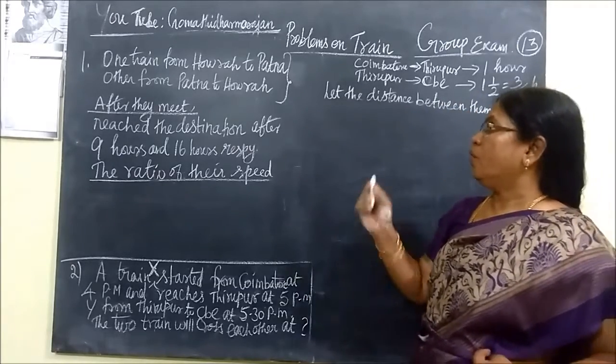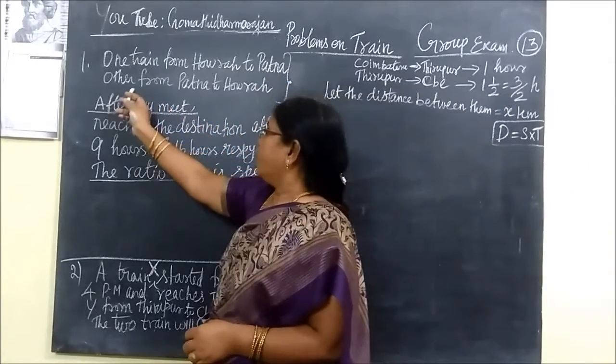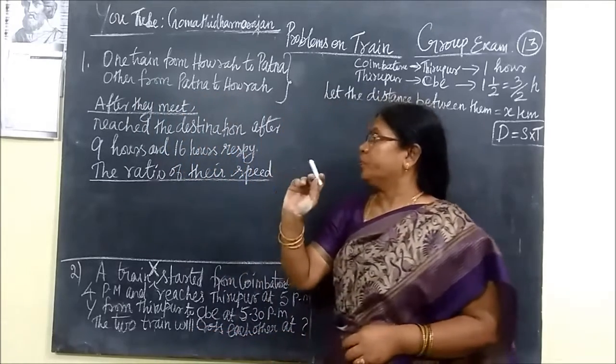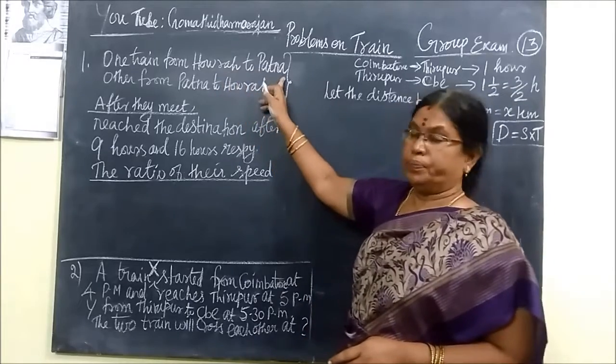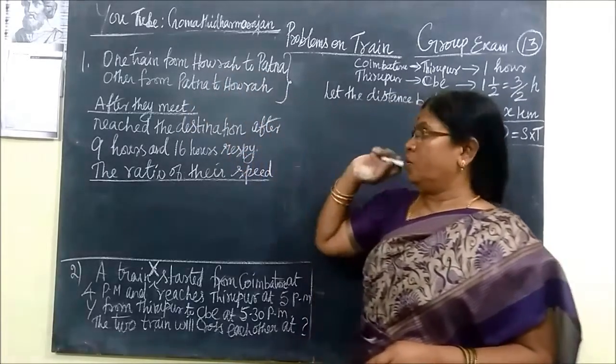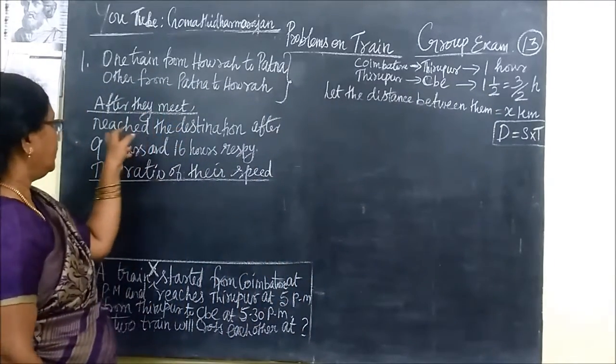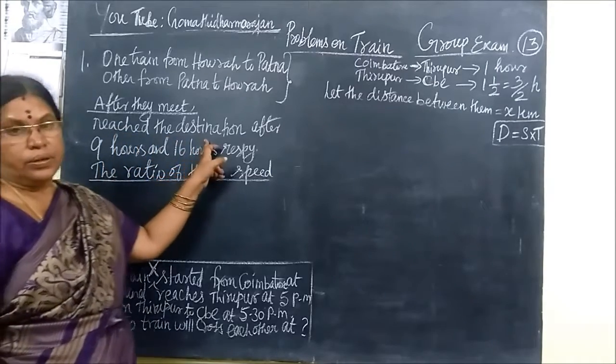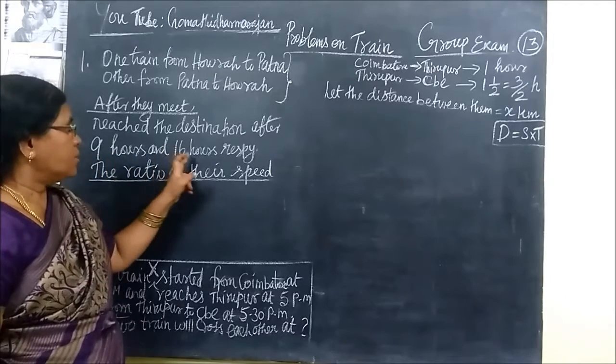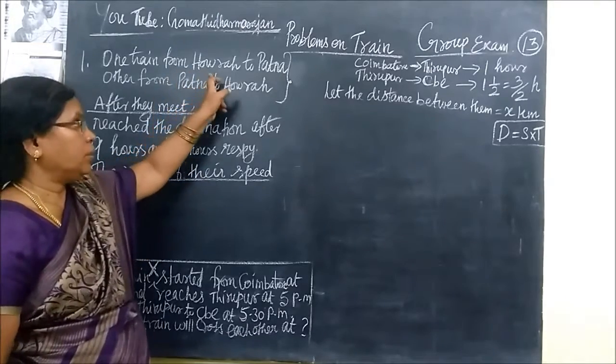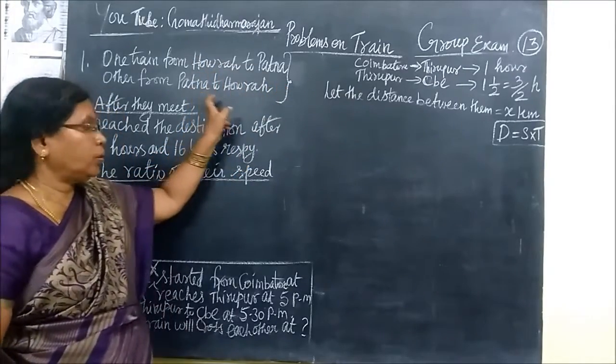You see the first one. One train from Hauru to partner and the other train from partner to Hauru. So the two trains, one from Hauru to partner and the other train from partner to Hauru. After they meet, the area is ready to meet. Reach is the destination. Destination is the place where resides. After 9 hours and 16 hours.